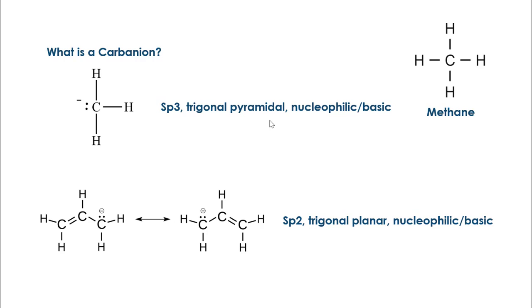That means that the bond angle is going to be less than 109.5, so you're looking at around 107 to 109 degrees. Another thing to note is because you have this extra electron density, the carbanion is going to be able to act as a nucleophile, such as the Grignard reagent which you'll see later in the course, or it can act as a strong base.